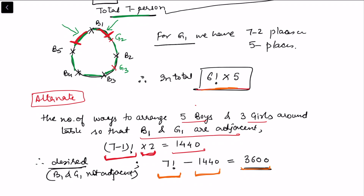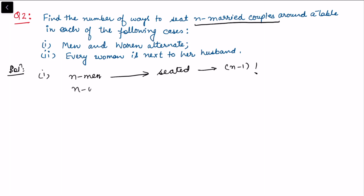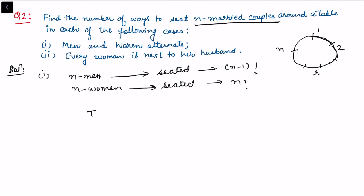The next question asks for the number of ways to seat n married couples around a table. In the first case, men and women alternate. There are n men who can be seated in n minus 1 factorial ways at the round table. Once the n men are seated, there are n spaces between them, so n women can be seated in n factorial ways. In total: n minus 1 factorial times n factorial.